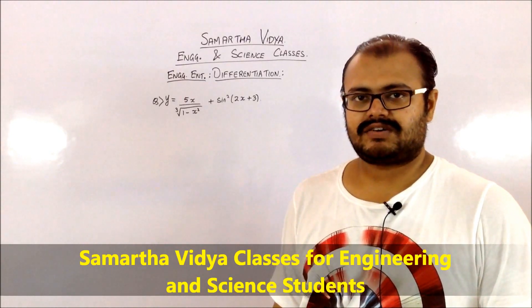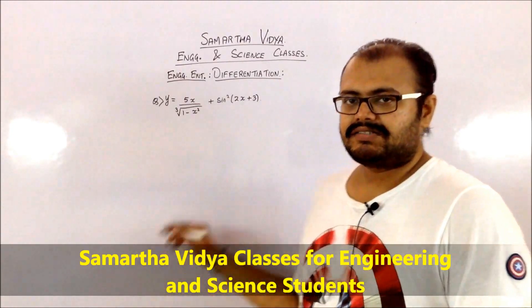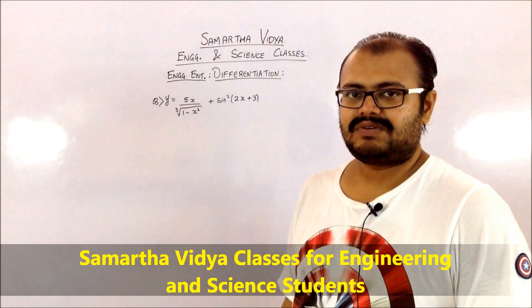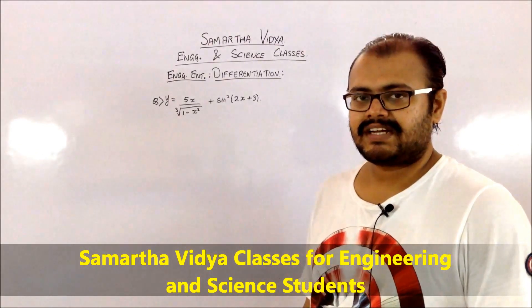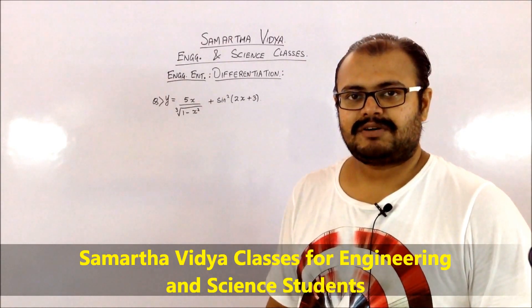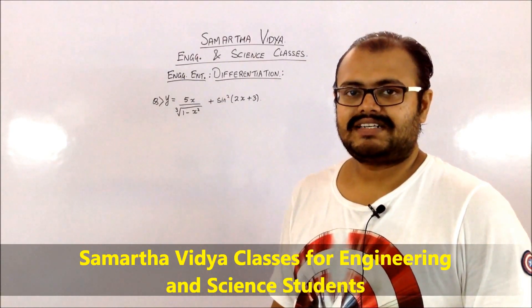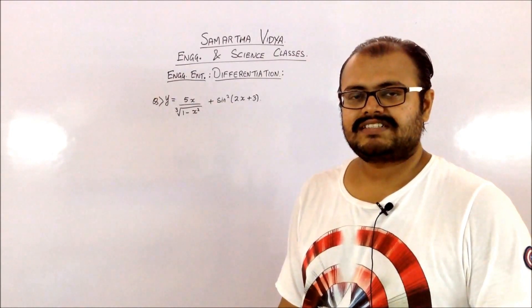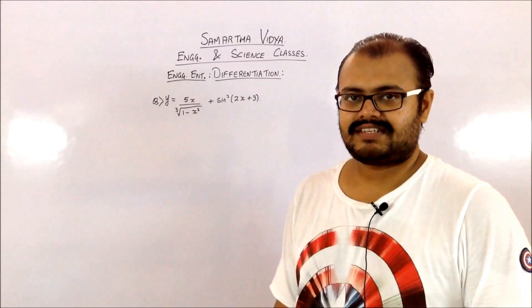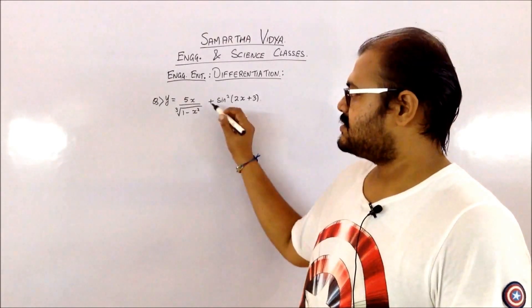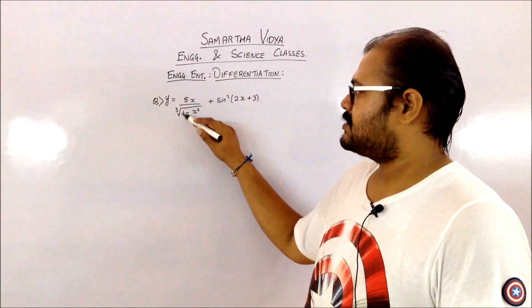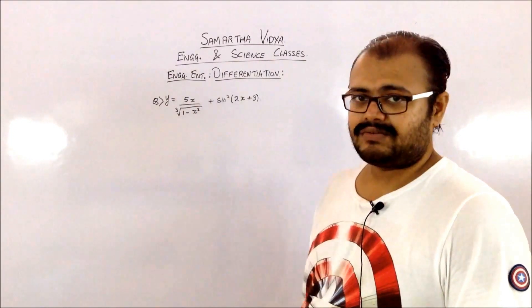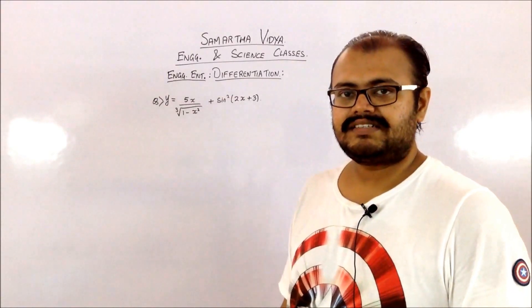Whenever you have a function like this which is quite complicated, you have to analyze it thoroughly. One of the key points in understanding any derivative problem is to identify the composite functions — a function within a function. Looking at the first term, which is 5x upon the cube root of (1 minus x squared), you might go for the u/v rule or the u*v rule.